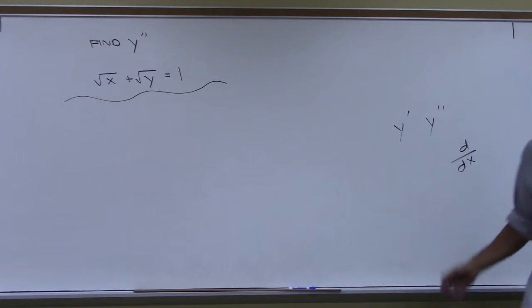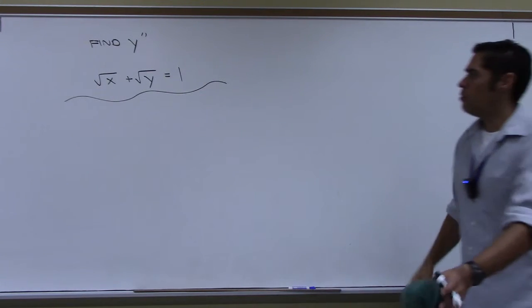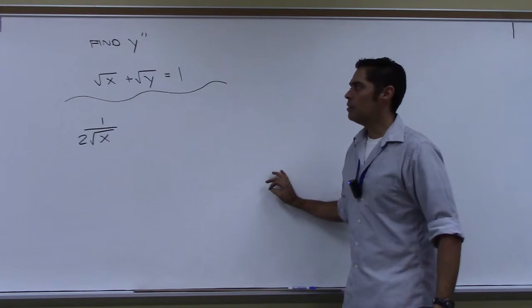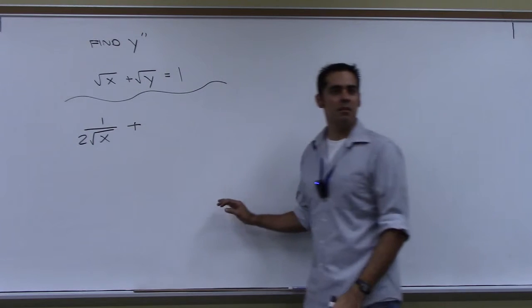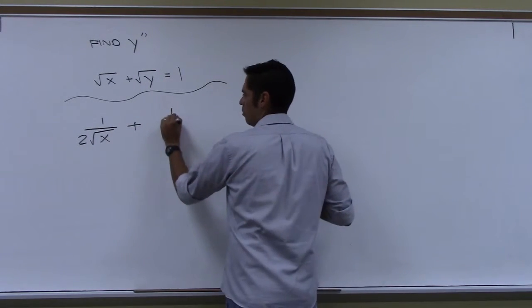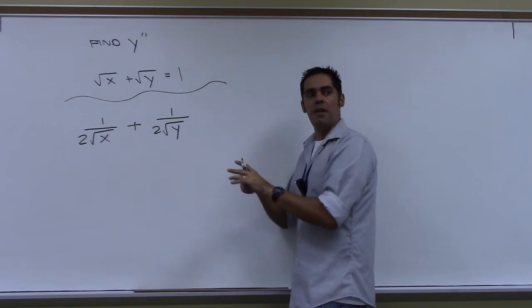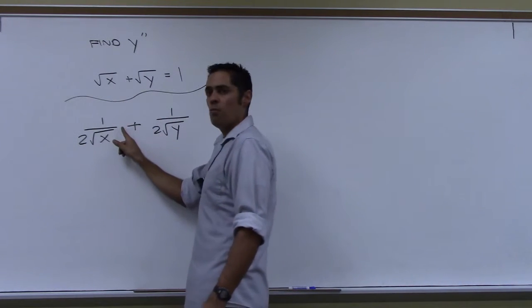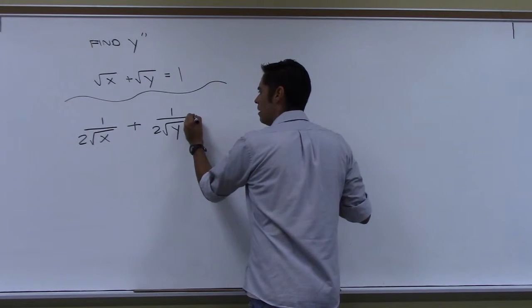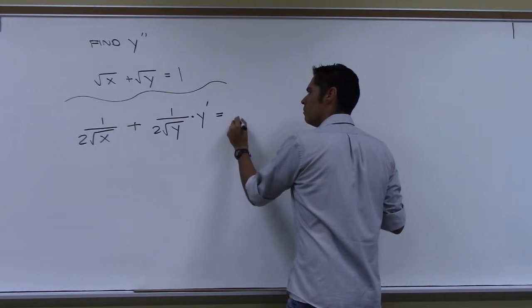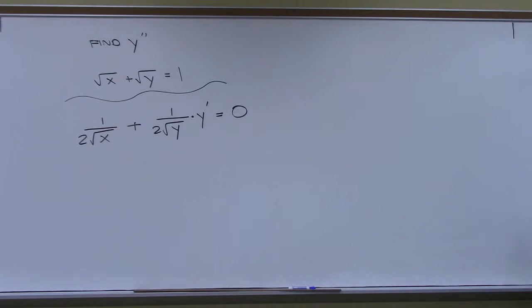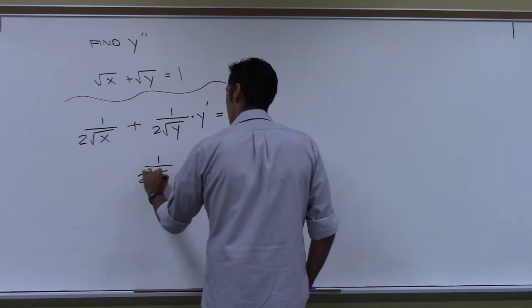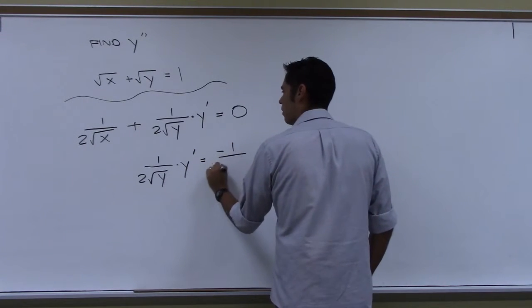The derivative of square root of x is 1 over 2 root x — no problem. Plus the derivative of square root of y: that's 1 over 2 root y, but then you have to take the derivative of what was inside, which is dy/dx. The derivative of x inside was 1, so you didn't need to write it. Here we do. Equals zero.